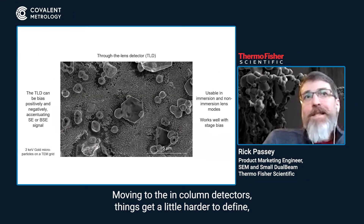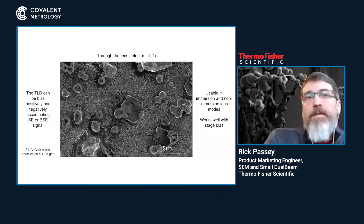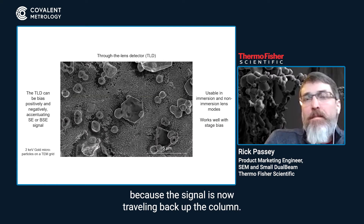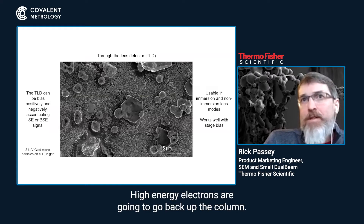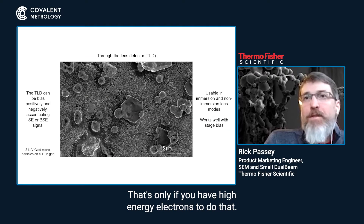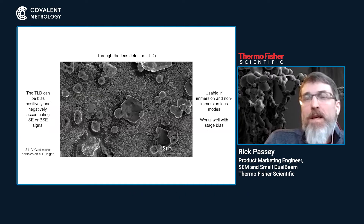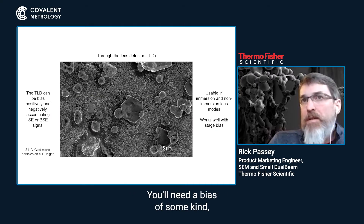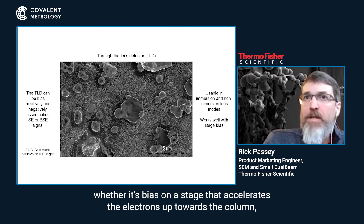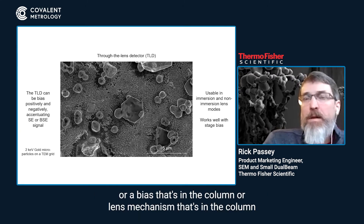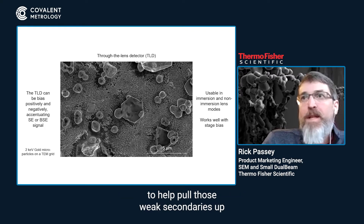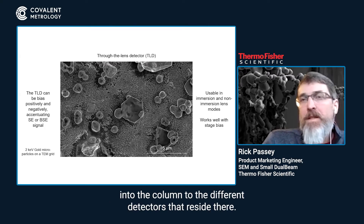Moving to the in-column detectors, things get a little harder to define because the signal is now traveling back up the column. High energy electrons are going to go back up the column, but that's only if you have high energy electrons to do that. At low accelerating voltages, you're still only generating weak secondaries and you'll need a bias of some kind — whether it's a bias on a stage that accelerates the electrons up towards the column, a bias in the column, or a lens mechanism in the column to help pull those weak secondaries up into the column to the different detectors that reside there.